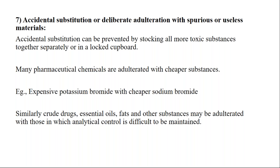Potassium bromide is the main chemical you want, but it is substituted with cheaper sodium bromide. So sodium bromide becomes an impurity to your potassium bromide. This way, impurities can be caused by accidental substitution or deliberate adulteration. To prevent this contamination, chemicals have to be stored separately or in a locked cupboard so they don't mix.